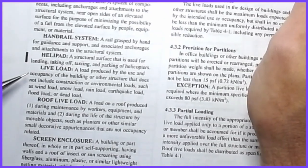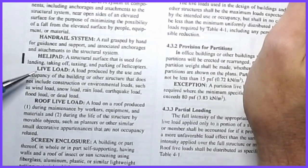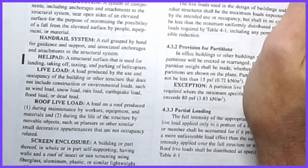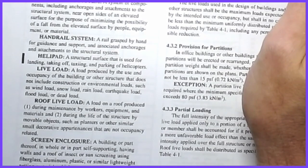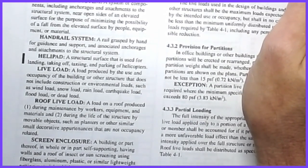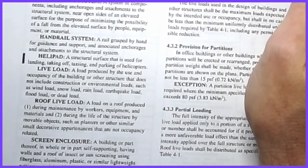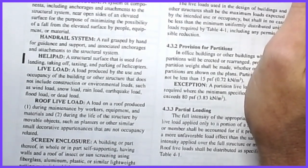The formal definition of a live load is a load produced by the use and occupancy of the building or other structure that does not include construction or environmental loads. Construction loads are their own category — they can be excessive and while you need to account for them, once the building is completed you'll never have a bulldozer or steamroller on your structure. It's a short-term special consideration.